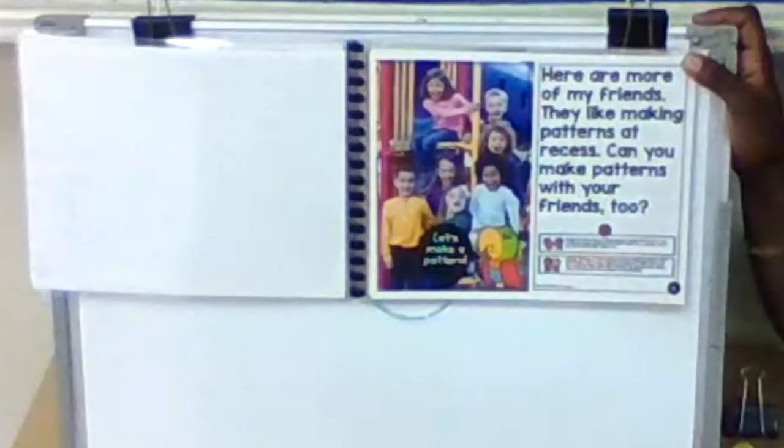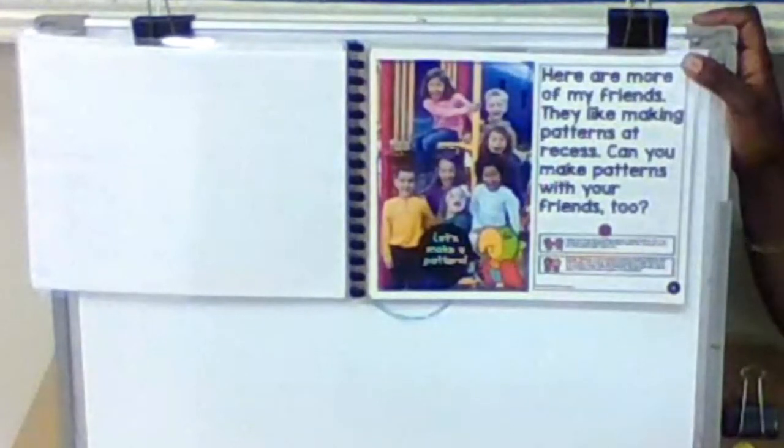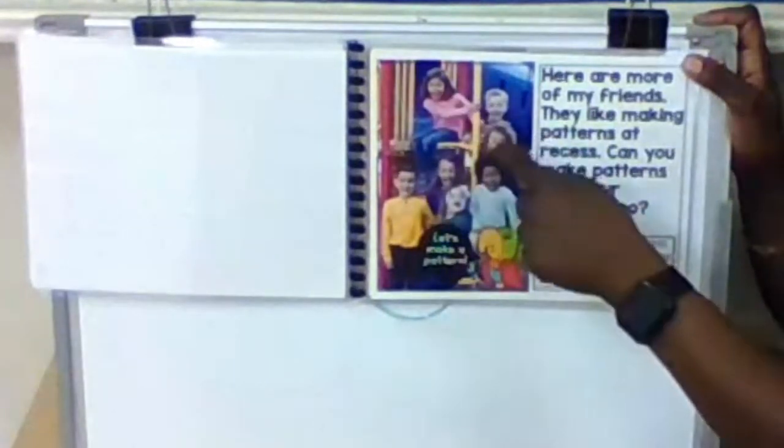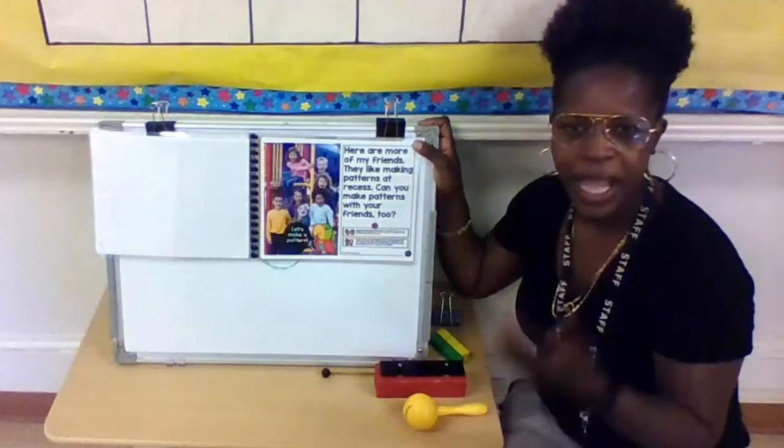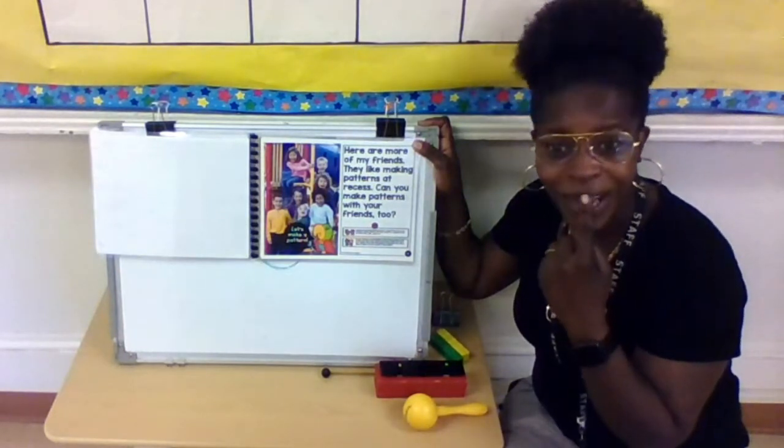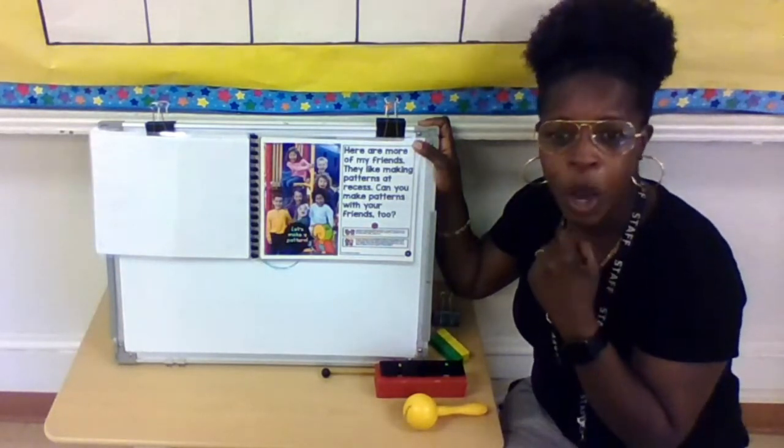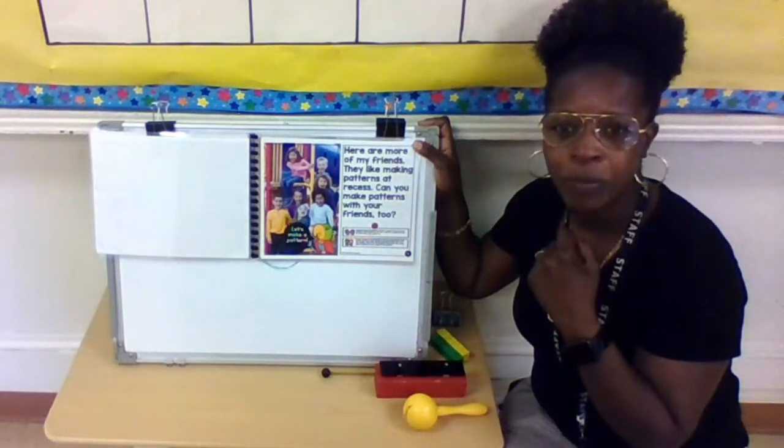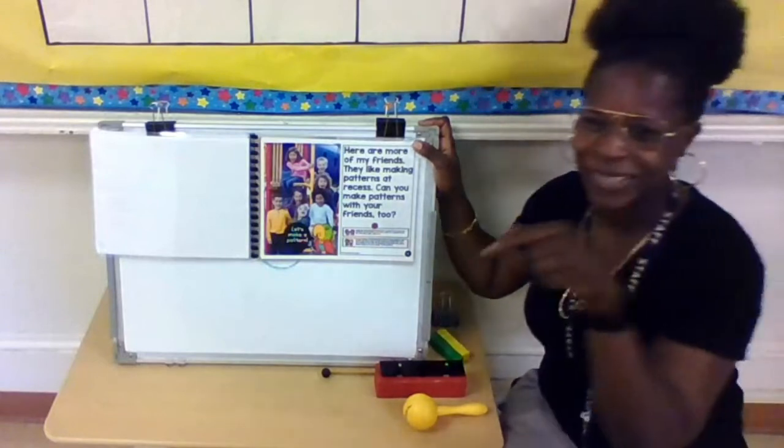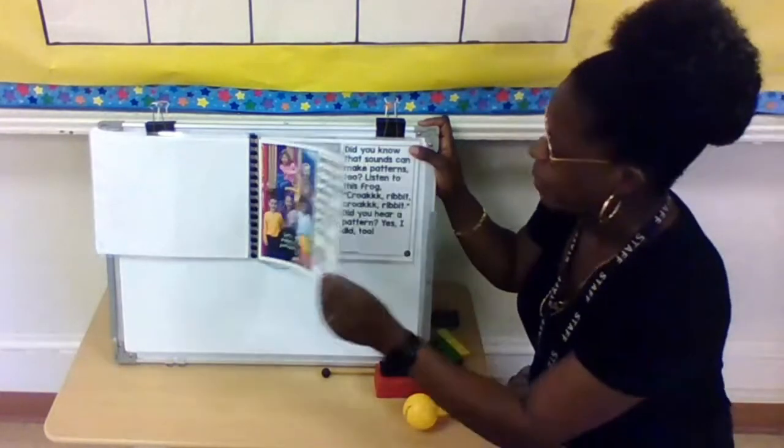Here are more of my friends. They are making patterns at recess. Can you make patterns with your friends too? So looking at this picture of these friends right here, I see that they all have their mouth open. I think we could do a pattern with our mouths. You want to try? Let's see. Ready? Open, close. Open, close. Can you go faster? That was silly. All right, my friends, let's keep going.